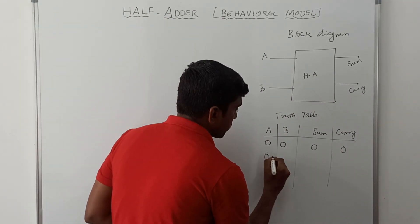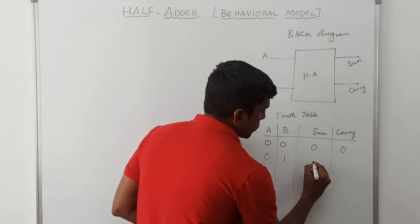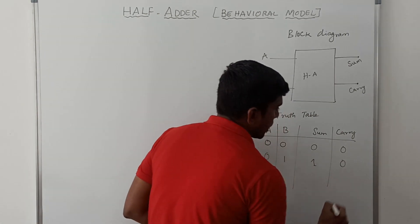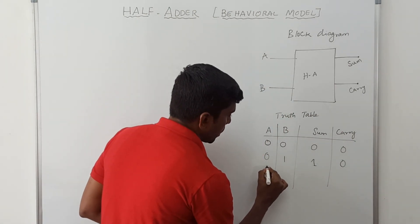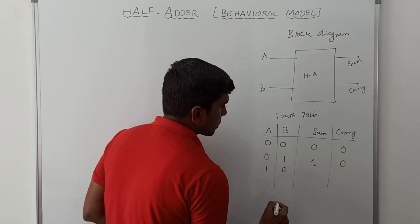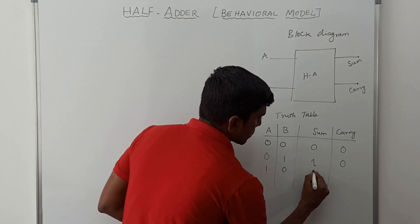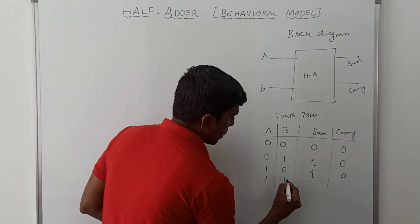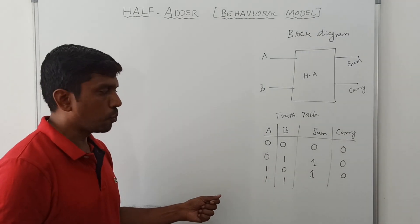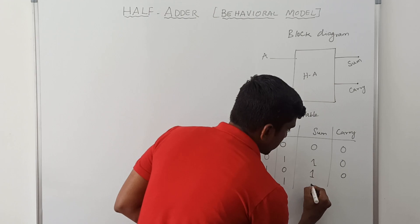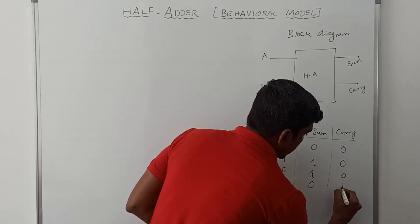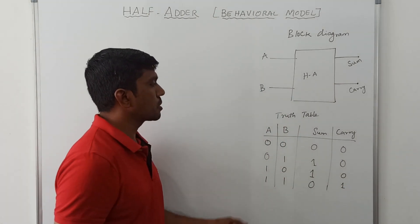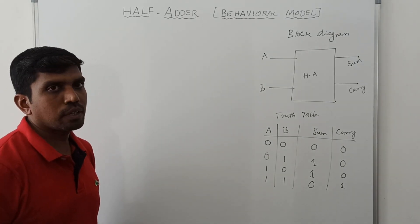The next input is 0, 1 — sum is 1 and carry value is 0. And the final one: both inputs are 1, 1 — in this case sum is 0 and carry value is 1. This is the simple truth table for the half adder circuit.